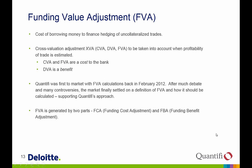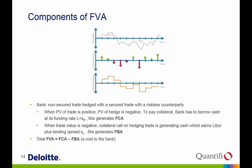FVA is generated by two parts: FCA (Funding Cost Adjustment) and FBA (Funding Benefit Adjustment). When a bank does a non-secured trade, it hedges with a secured trade with a riskless counterparty. When the PV of the original trade is positive, the PV of the hedge is negative, so the bank must borrow cash at its funding rate — LIBOR plus spread — generating FCA. Conversely, when the trade value is negative, the collateral call on the hedging trade generates cash earning LIBOR plus lending spread SL, generating FBA. Total FVA equals FCA minus FBA.